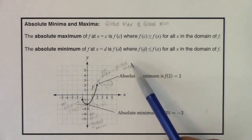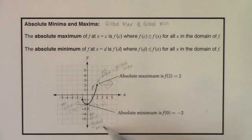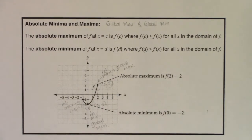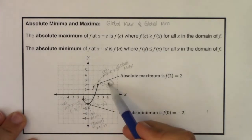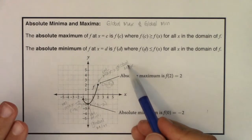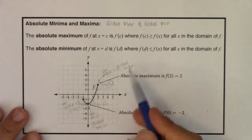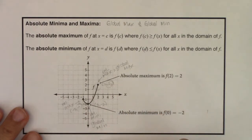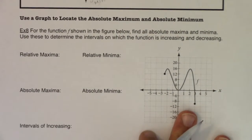You will have at most one absolute maximum value and one absolute minimum value. It might occur at a couple of ordered pairs, but there is only one value. And it's not always the case — there are plenty of functions with no absolute maxes or mins. Relative maxes and mins come a dime a dozen, but for any function there is at most one global maximum value and at most one global minimum value, though it may occur at multiple points.